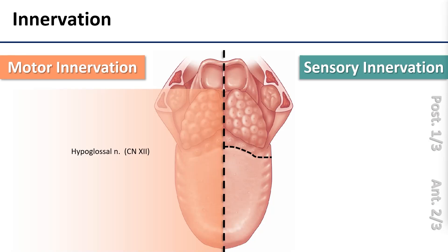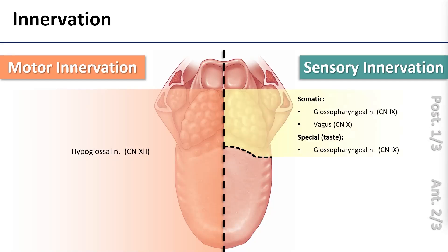Our sensory innervation is less simple, but it's not hard. Starting posteriorly, the bulk of the posterior third of the tongue gets sensory innervation — both special and somatic — via the glossopharyngeal nerve. This territory begins just anterior to the vallate papillae, which is slightly different from the root of the tongue, which begins just posterior to them.